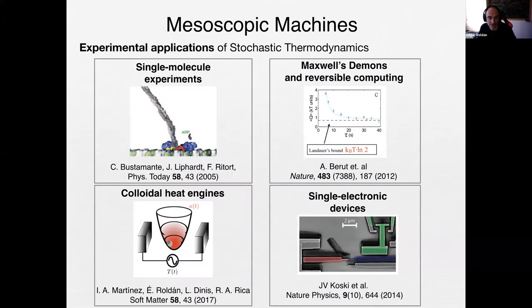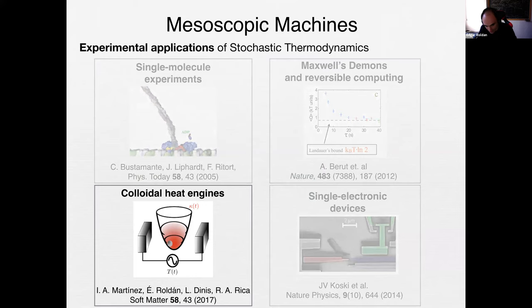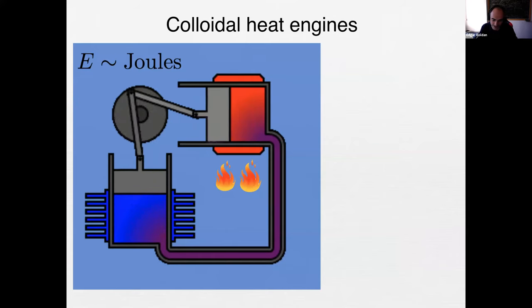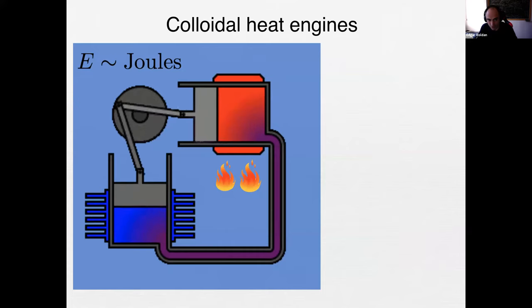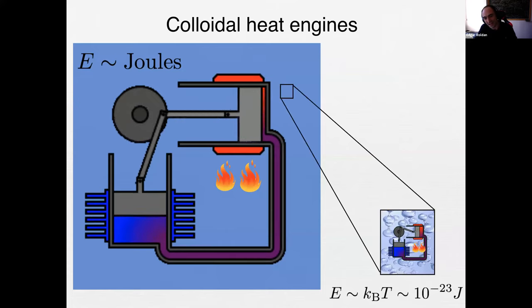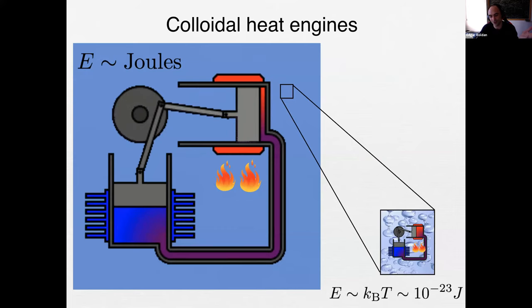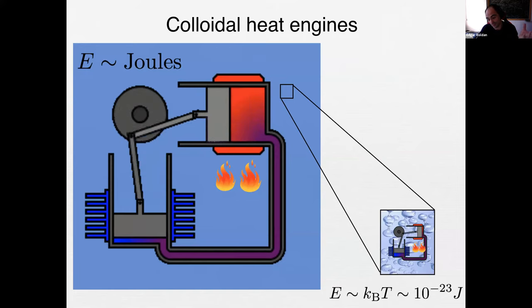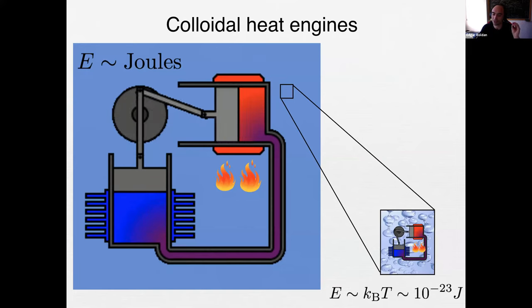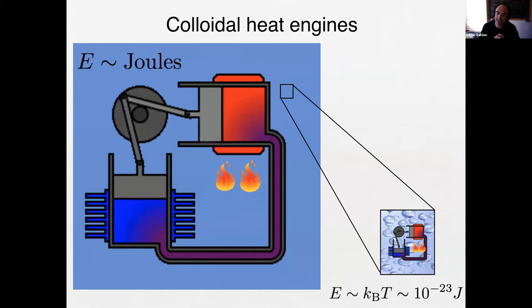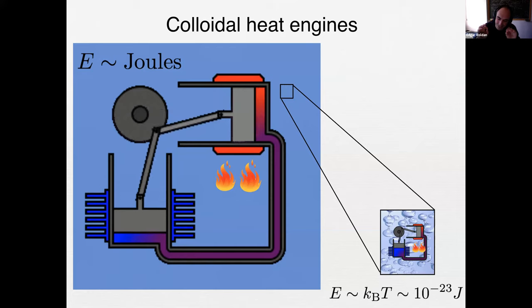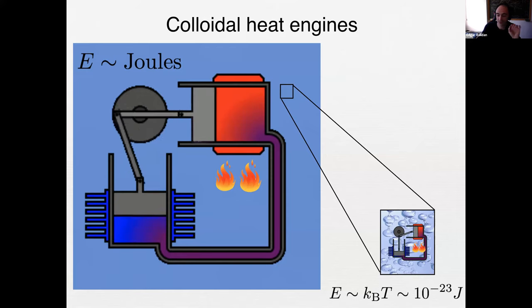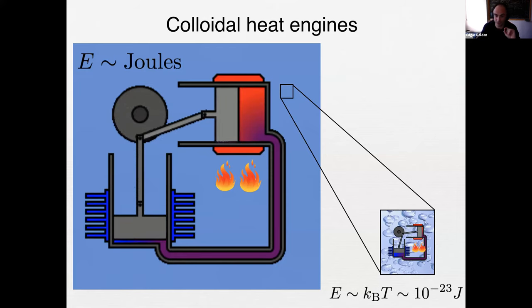Now I'll switch gears and discuss small engines — colloidal heat engines. By the way, there is a review paper we wrote in 2017; I recommend you take a look. A colloidal heat engine is an engine of molecular size — the energy per cycle is of order k_BT, about 10⁻²³ joules. What is important is that this energy is comparable to the thermal energy of a single bath molecule, making these engines strongly affected by fluctuations. That's why we need stochastic thermodynamics.